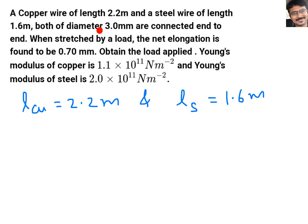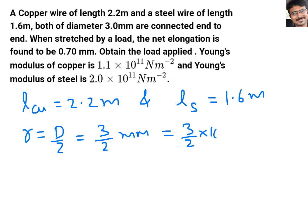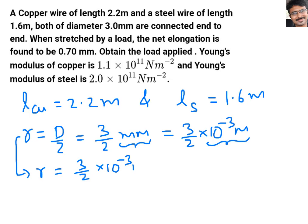Both wires have the same diameter of 3 millimeters, connected end to end. Since radius is half of the diameter, radius is 3/2 millimeters. Converting to SI units, radius = 3/2 × 10⁻³ meter, since 1 millimeter = 10⁻³ meter. They gave diameter directly; from that we derived the radius.